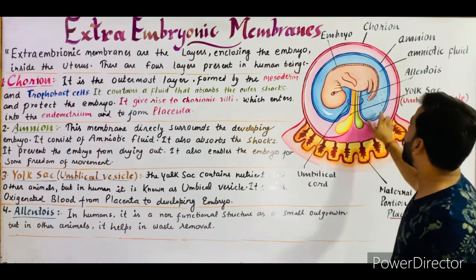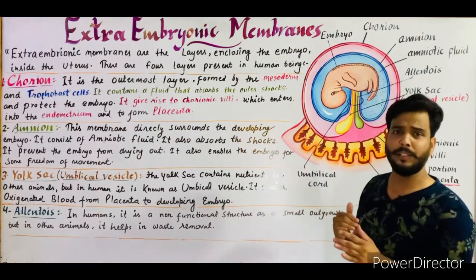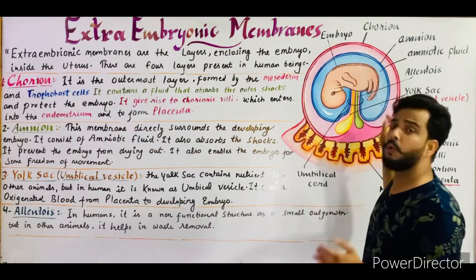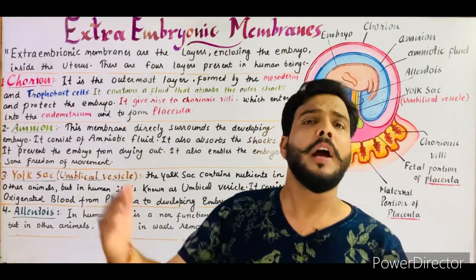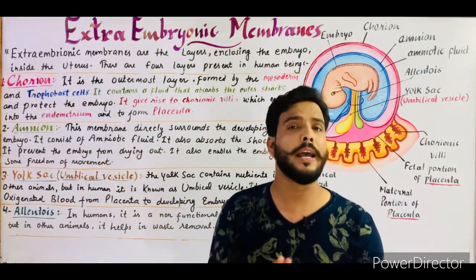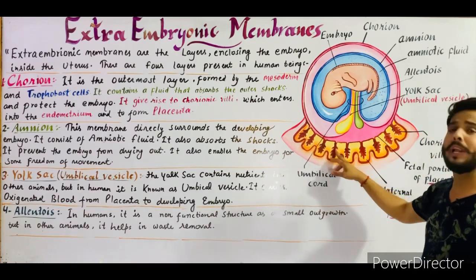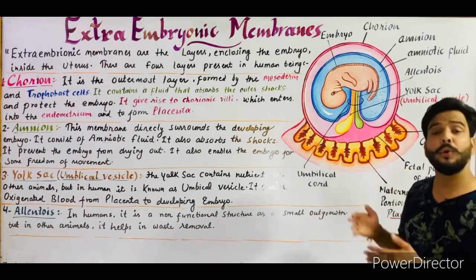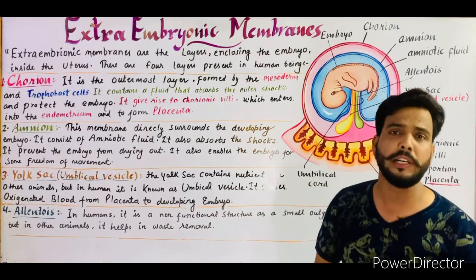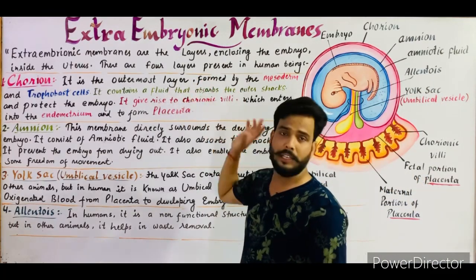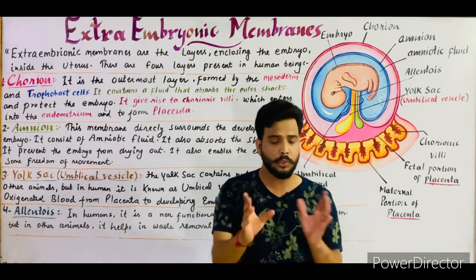Starting with number one — the chorion. As you can see in the diagram, the outermost layer is known as the chorion. Inside the chorion, a chorionic cavity is present, and inside this cavity a fluid is filled which protects the embryo from outer shocks and jerks. It is the outermost layer and gives rise to chorionic villi.